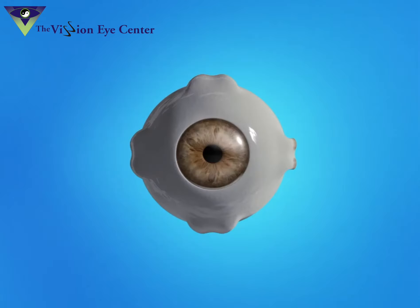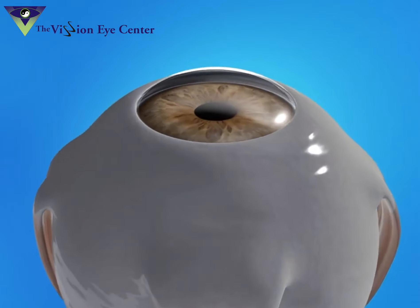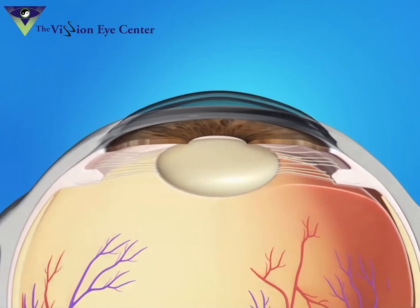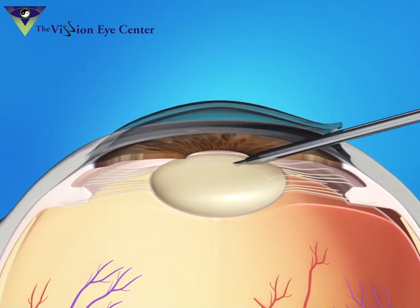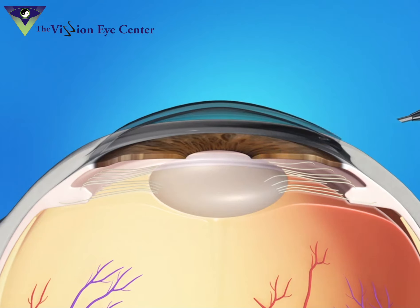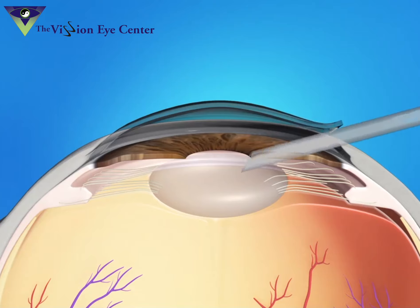During the surgery, your ophthalmologist will make a small opening at the side of your cornea. He will then insert a pen-shaped instrument through the opening to reach the lens. This instrument uses a special type of energy to break up the center of the cloudy lens and suction out the lens pieces.